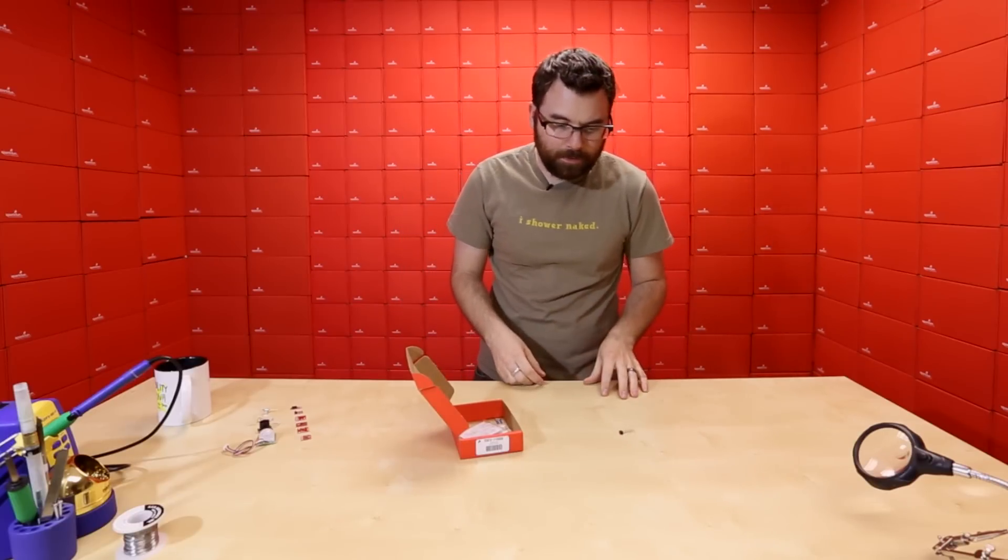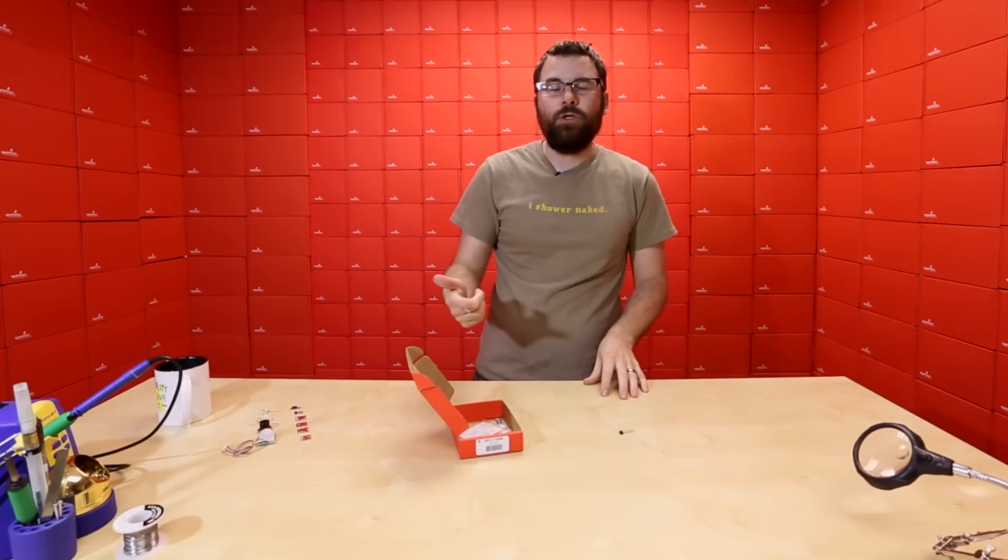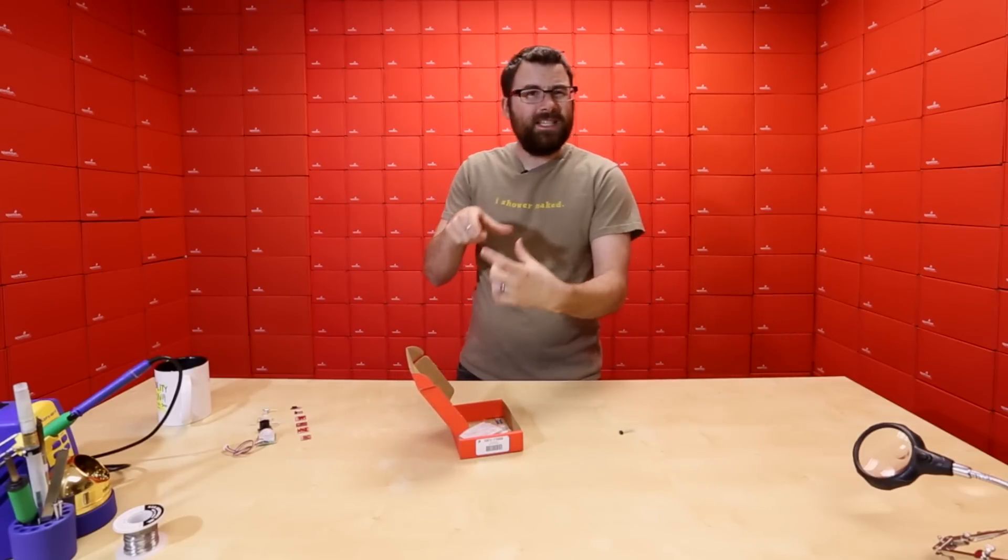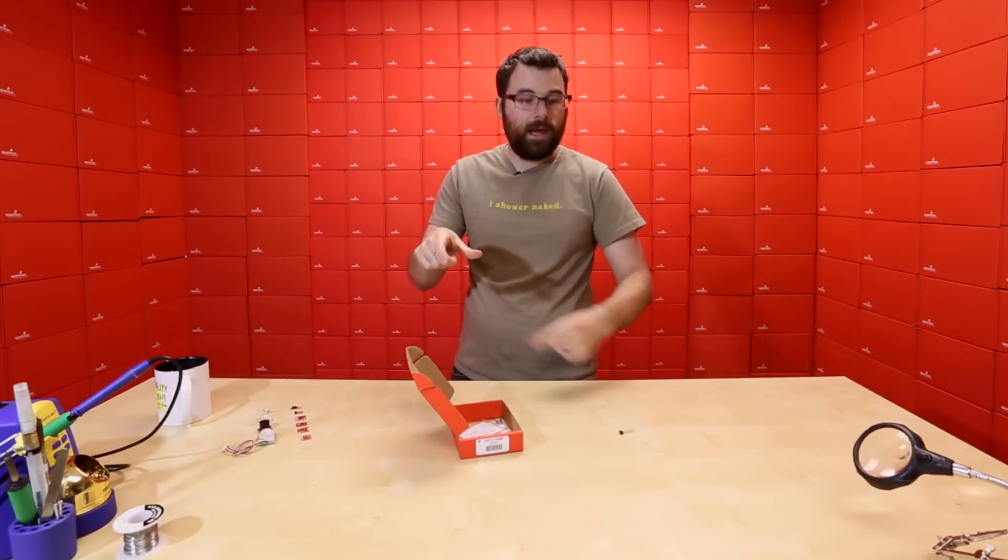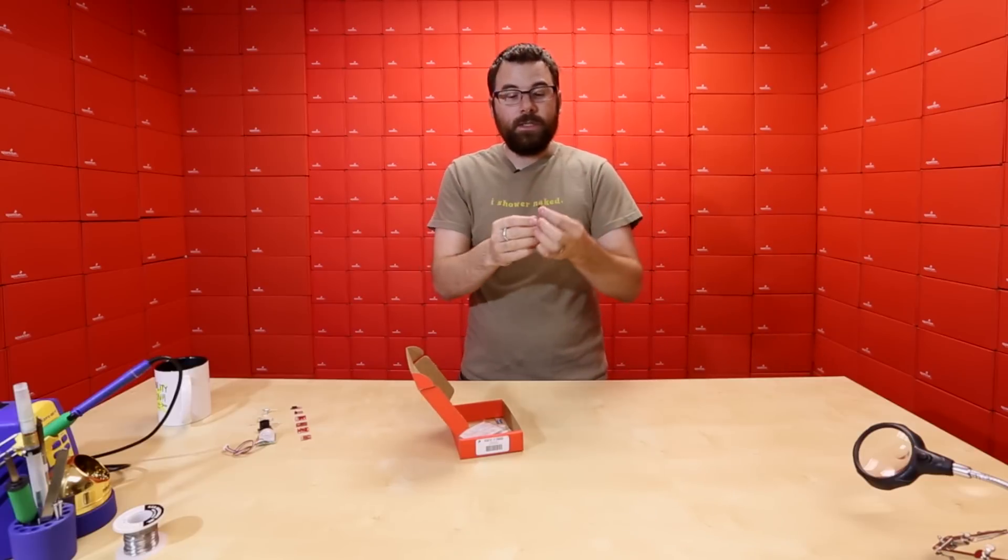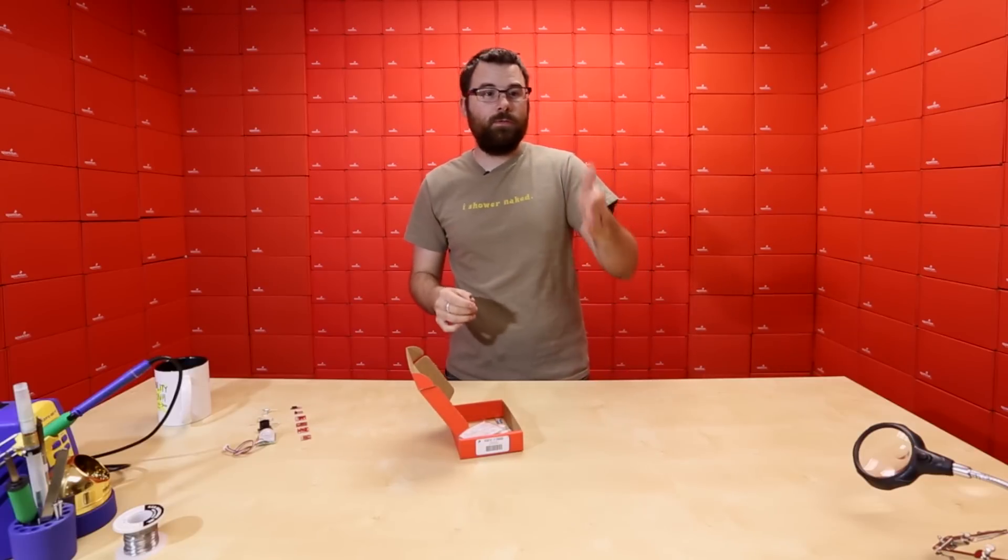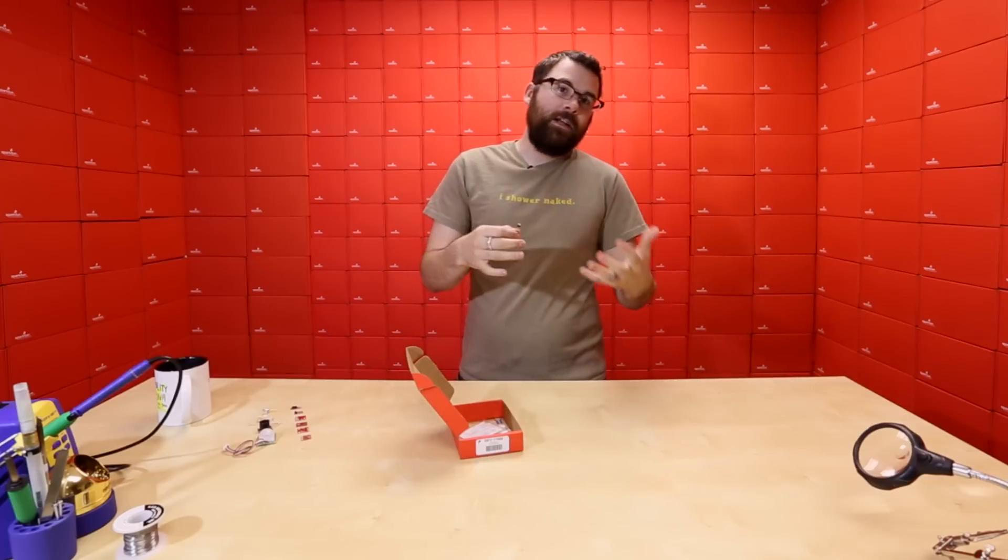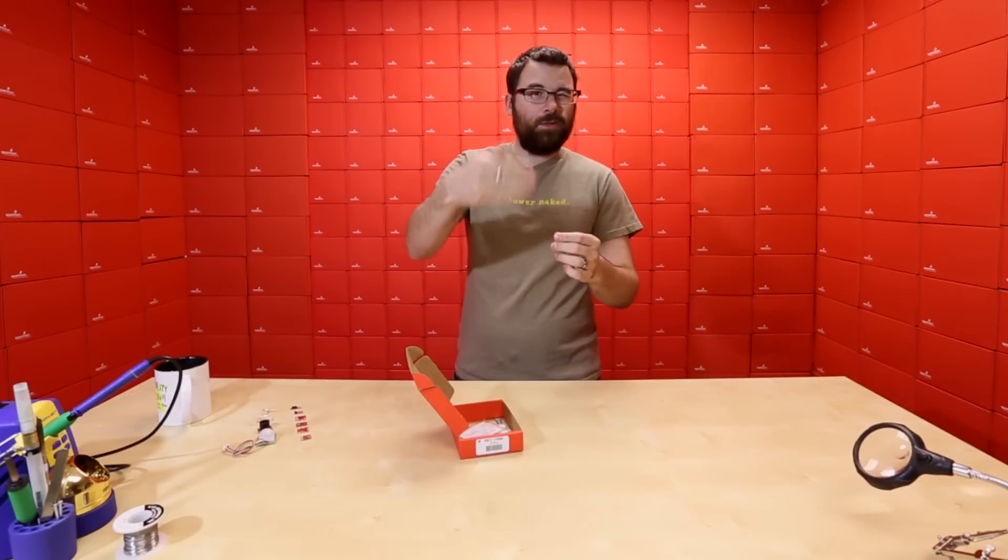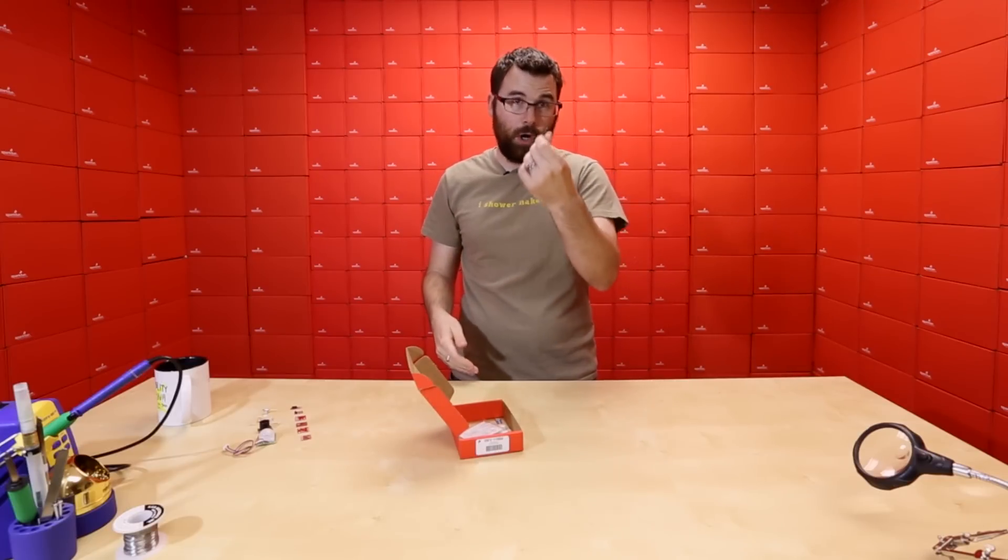But you can also use these as like a line follower or black and white detection. So let's say you have a thing that's spinning, and you're trying to figure out how quickly it's spinning. You can put a little disc on there that has little slices of black and white, spin it in front of this, and this can actually detect the transitions from black to white. And if you find out how fast that's going, how quickly the transitions are happening, you can determine the RPM.